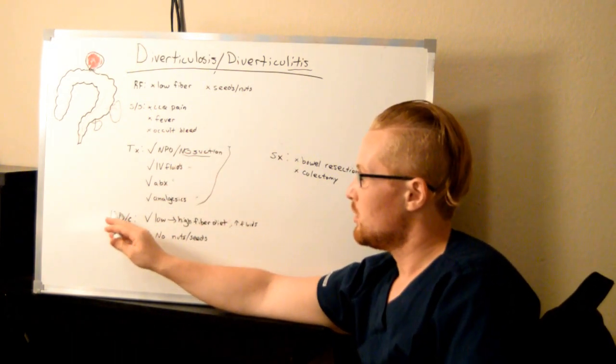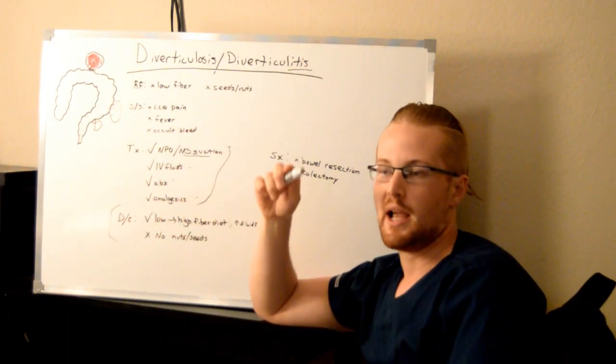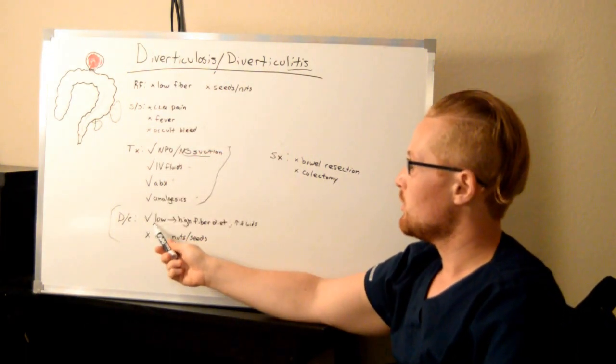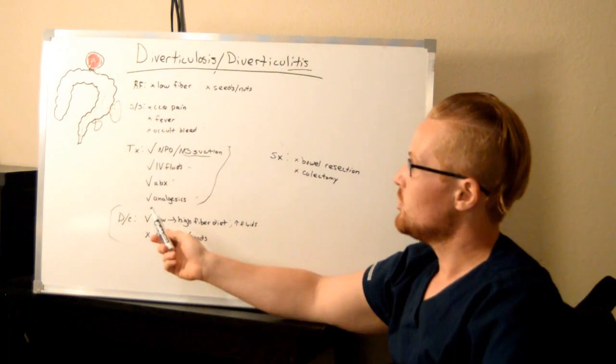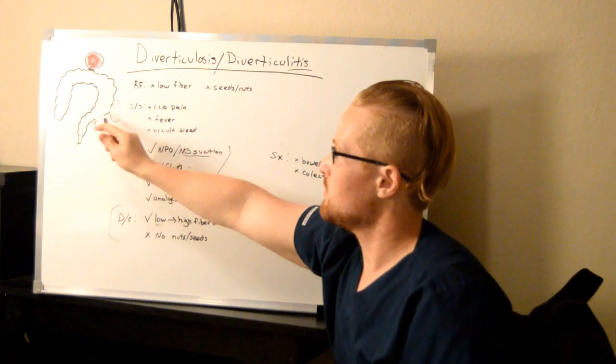I talked about NPO at first for bowel rest. Once this starts getting better, clear liquid diet. Then the diet you want to have after that is going to be low fiber. Why do I say low fiber? Because you don't want a bunch of abrasive material passing through here on this inflamed diverticulitis.